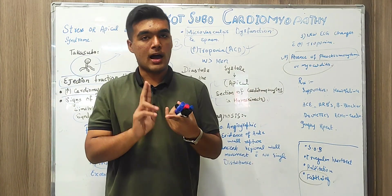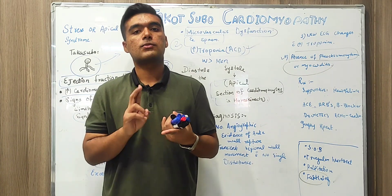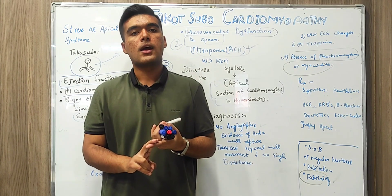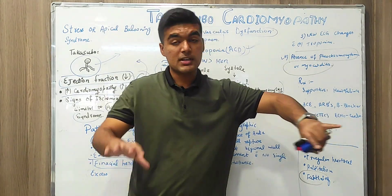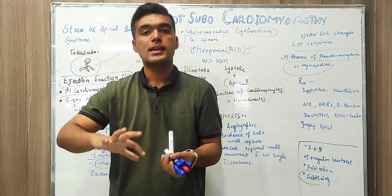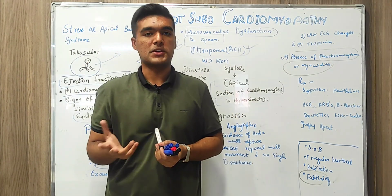Second is heart failure treatment. In those we will use ARBs, we will use beta blockers, we will use diuretics, we will use repetitive echocardiography to check out if there are any improvements occurring in this Takotsubo Cardiomyopathy patient.